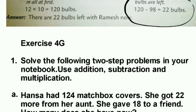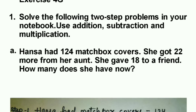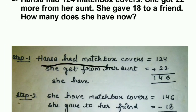Exercise 4G: there are 5 questions; I have solved 3 and left 2 for you to solve. First two-step problem: Hansa had 124 matchbox covers and got 22 more from her aunt. She gave 18 to a friend. How many does she have now? Step 1: 124 plus 22 equals 146.